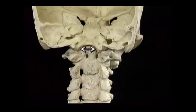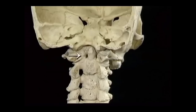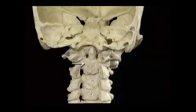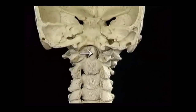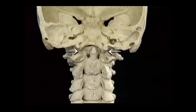Here's the foramen magnum. Here's the inside of the basal part of the occipital bone. Here's the atlas. Here's the axis. Here's the odontoid process. Here are the atlanto-occipital joints and the atlanto-axial joints.